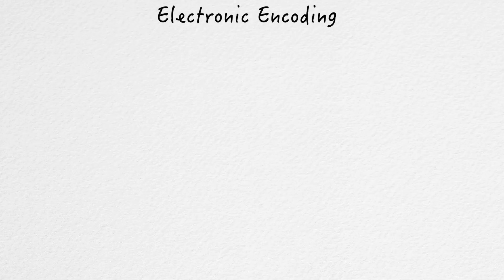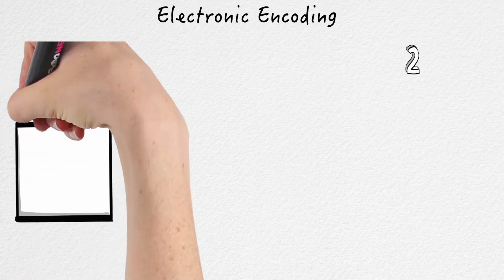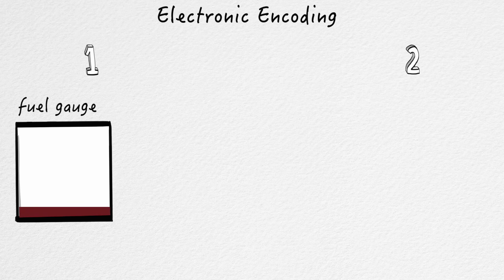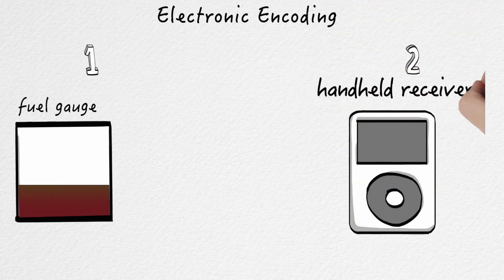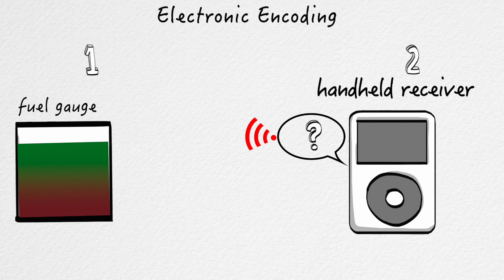Now, on the electronics and coding side of the system, there are essentially two major parts. There's the fuel gauge which is the part that actually sits on the generator and is the part that's measuring the fuel level. And there's the handheld receiver which kind of acts like the hub which can ask all of the fuel generators or the fuel gauge generators what level they're at. But first let's talk about the fuel gauge.